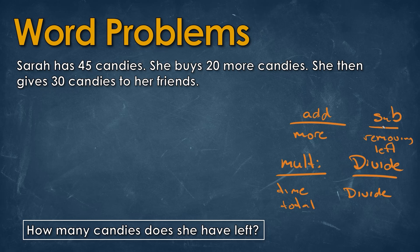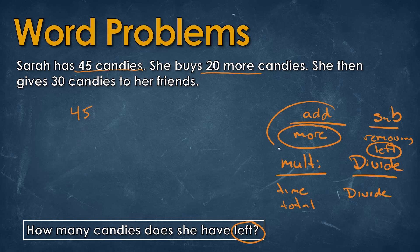So let's read this. Sarah has 45 candies. She buys 20 more candies — if we see that word 'more,' we'll save that. She then gives 30 candies to her friends. How many candies does she have left? So the first step: she has 45 candies and she buys 20 more, so we know we will add. 45 plus 20 — five plus zero is five, and four plus two is six — so we know we have 65.